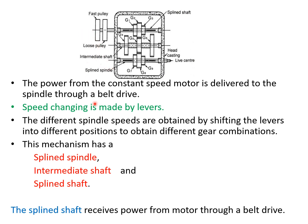The different spindle speeds are obtained by shifting the levers into different positions to obtain different gear combinations. This mechanism has splined spindle, intermediate shaft, and splined shaft. The splined shaft receives power from the motor through a belt drive.